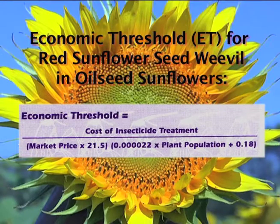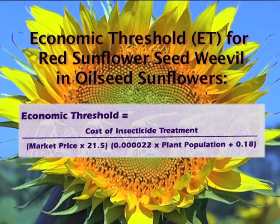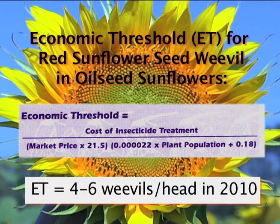To decide whether to use insecticide to control the red sunflower seed weevil, it's necessary to determine the economic threshold for this year. The economic threshold is based on the cost of insecticide per acre, the market price of sunflower in dollars per pound, and the plant population per acre. Using the cost of insecticide between eight and ten dollars per acre, the economic threshold is near four to six weevils per head this year.